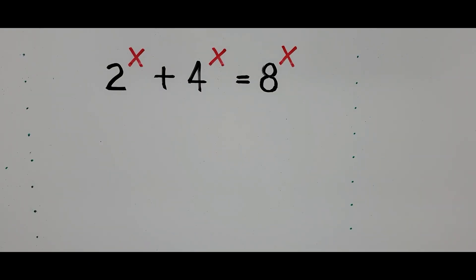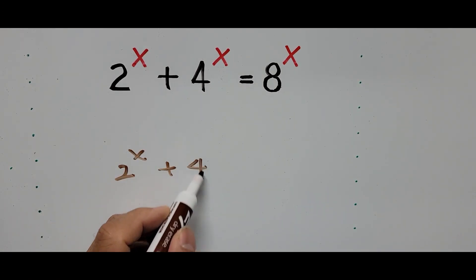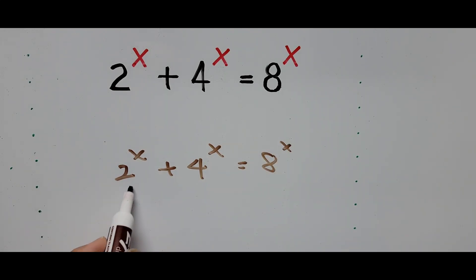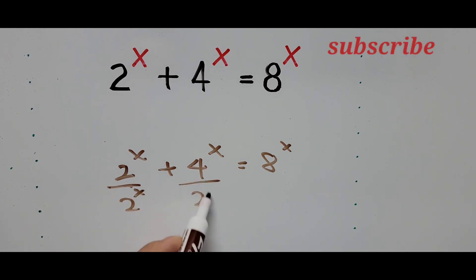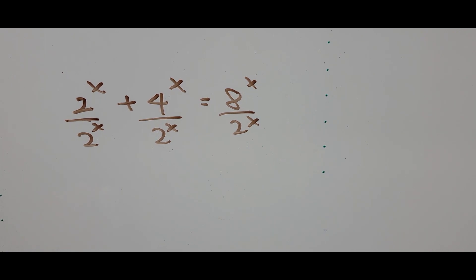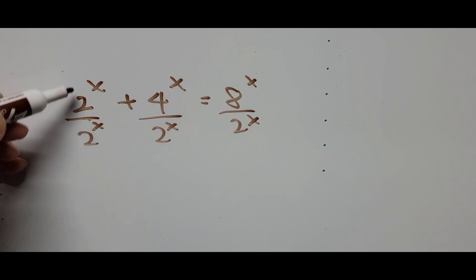Let's start solving. The first step is to divide the whole equation by 2 to the power of x, since that seems like the shortest solution. So: 2 to the power of x plus 4 to the power of x equals 8 to the power of x — divide by 2 to the power of x. Simplifying: 2 divided by 2, both to the power of x, becomes 1.